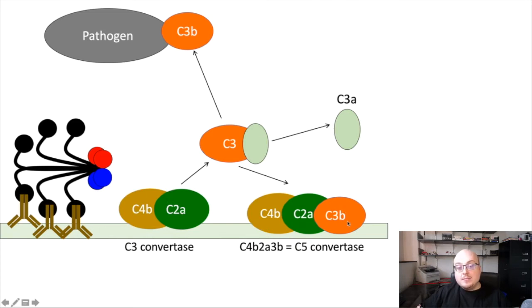And when C3B binds to the C3 convertase, in this case we have C4B2A3B, that makes a C5 convertase. And so the C5 convertase activity is important for recruiting more molecules of complement that we haven't discussed yet.